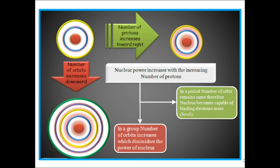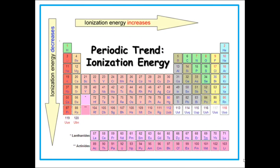So we can say, in a period, number of orbits remains the same. Therefore, nucleus becomes capable of binding electrons more closely. In a group, the number of orbits increases, which decreases the power of nucleus. So we can say ionization energy value increases as you move from left to right in a period, and ionization energy decreases as you move from top to bottom in a group.